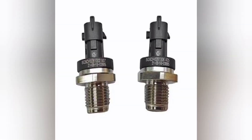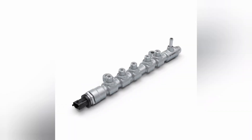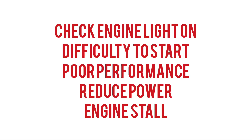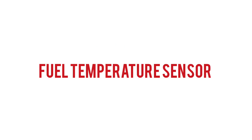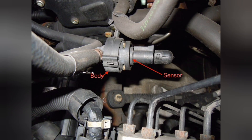The common rail pressure sensor is located on the fuel rail. Its function is to monitor the fuel pressure in the common rail. The fuel temperature sensor is designed to measure the temperature of the fuel and relay this information to the engine control unit so that it can optimize the air-to-fuel mix ratio.